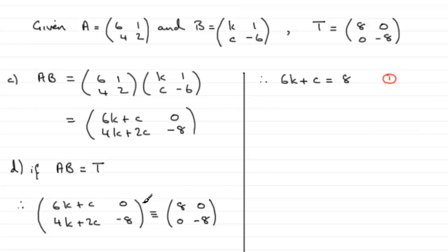And we can also see that 4K plus 2C must equal the 0. I can divide this through by 2, so if I did that we would therefore have that 2K plus C must equal 0. I'll call that equation 2.